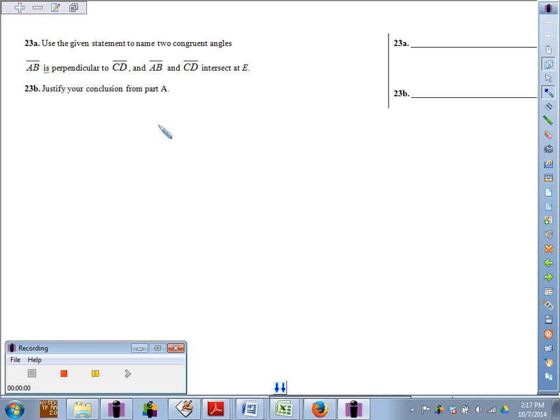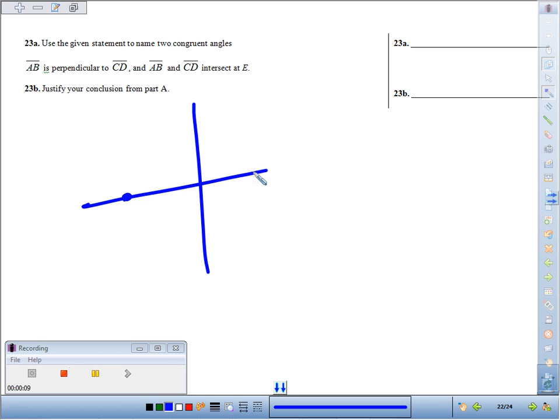Problem 23: We're going to use the given statement to name two congruent angles. AB is perpendicular to CD, and AB and CD intersect at point E. So to name two congruent angles, we could use the right angles congruent theorem or vertical angles congruent theorem.